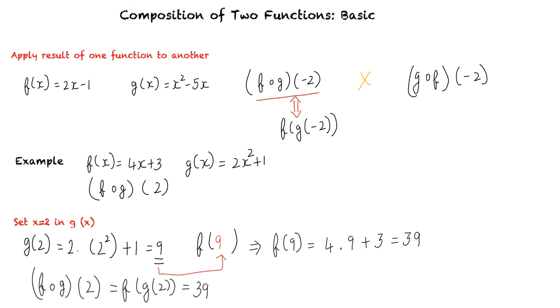We have thus evaluated f(g(2)) = 39. Okay, I think I understand the concept. In order to determine the composition of two functions, we evaluate one function and apply this result to another function. Perfect.